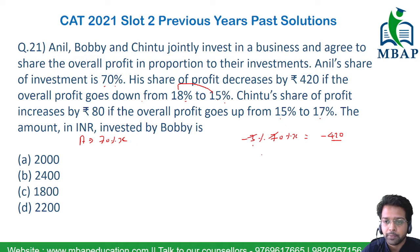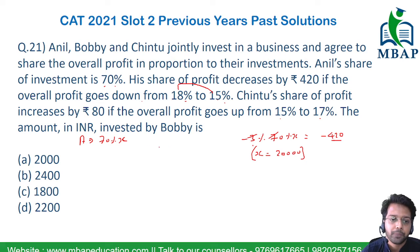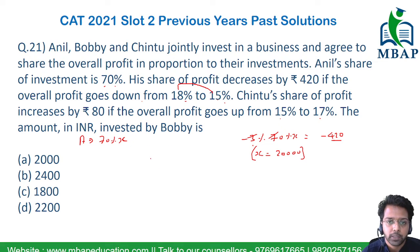That gives us 2.1% of X equals 420, so the value of X is 20,000. This X is the overall total investment. So now we know the total investment is 20,000, and A has invested 70% of that. Now let's move on to C.